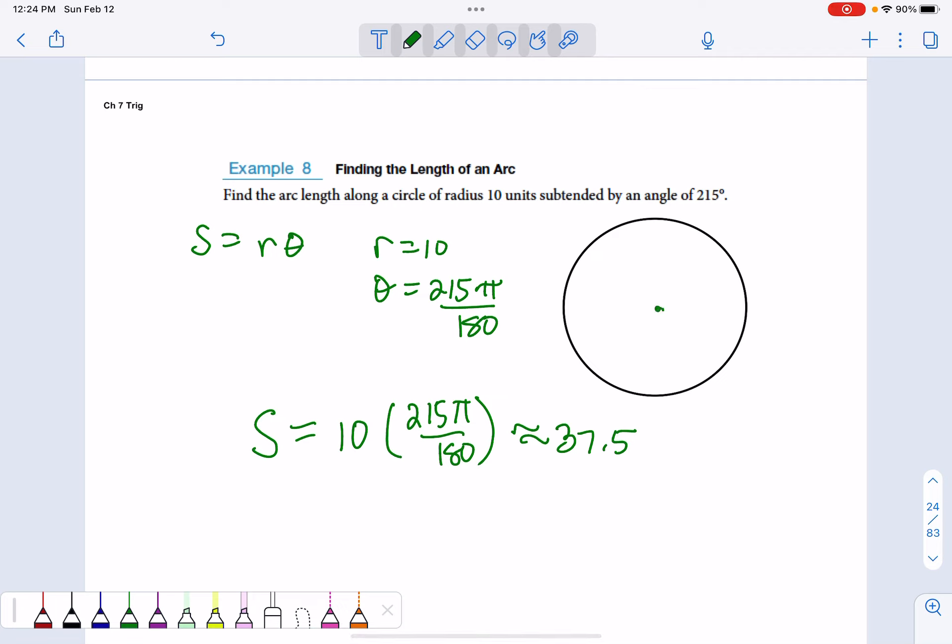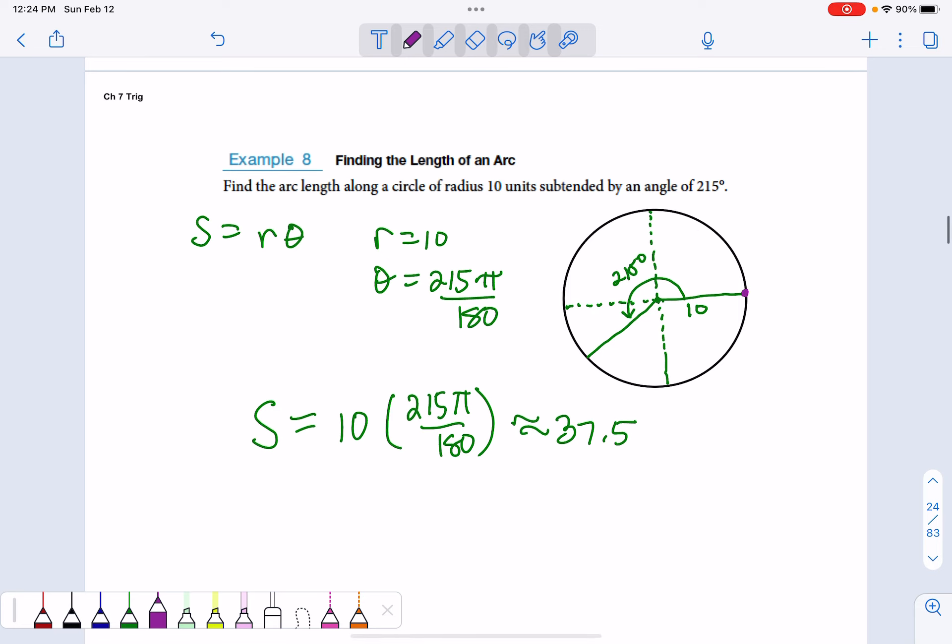If we were to draw this, we could label this as 10. Here's 215, here's 90, here's 180, here's 270. So 215 is after 180, 35 more, so it's about right here. This would be our angle 215. And then the arc length we just found, if we were to take a string and measure from here to here, that's the S that they're talking about. It would be about 37.5 units, whatever those units would be.